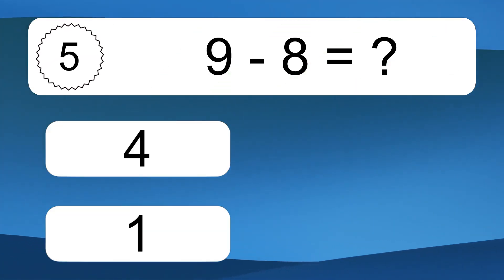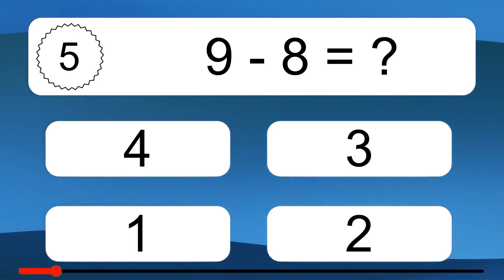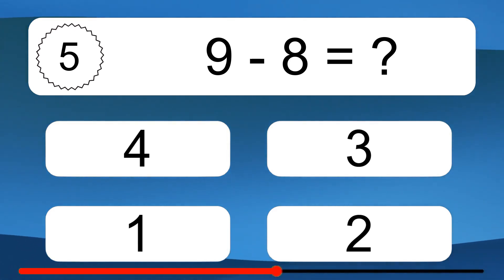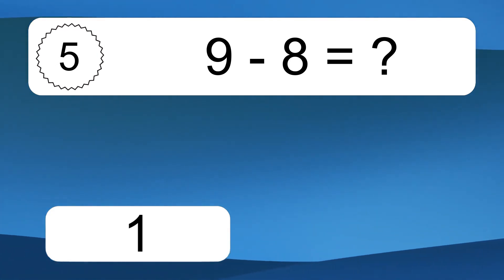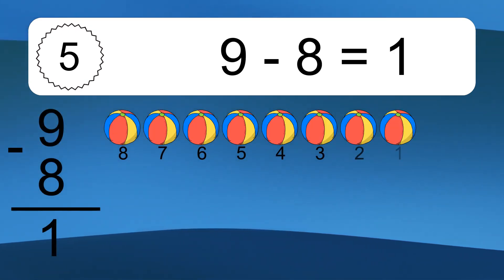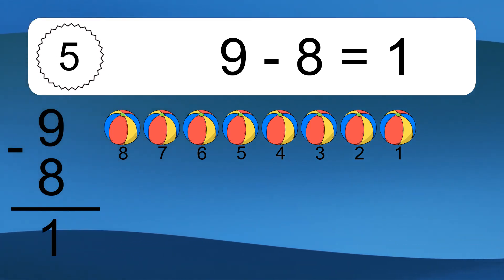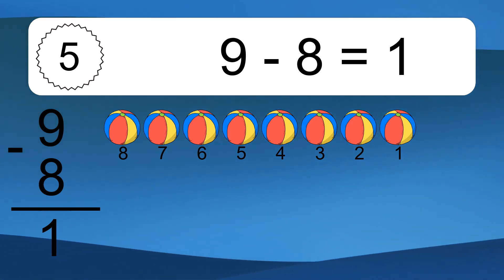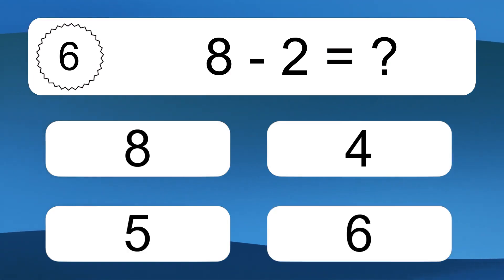9 minus 8 equals what? 9 minus 8 equals 1. Let's count it: 8, 7, 6, 5, 4, 3, 2, 1.